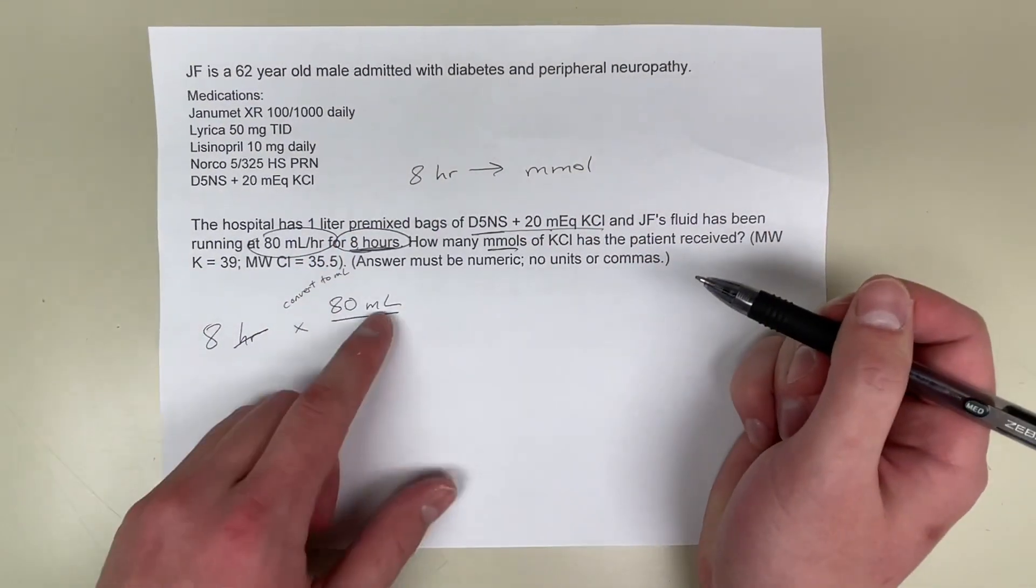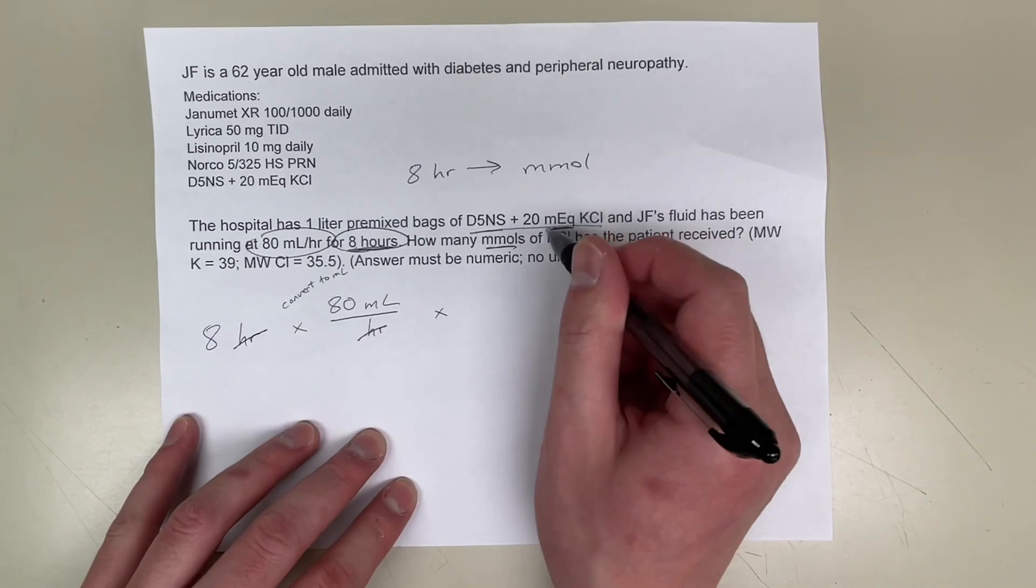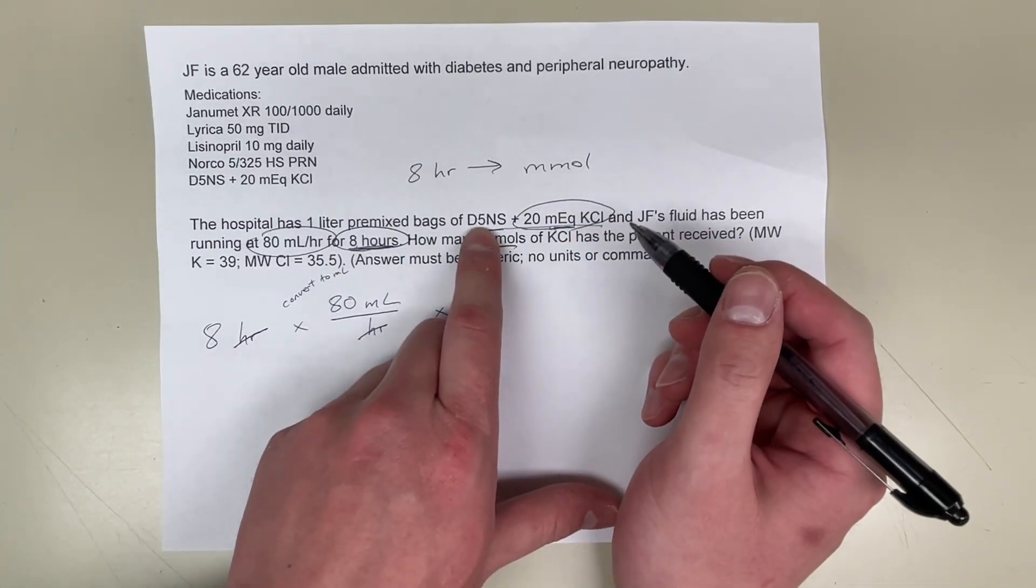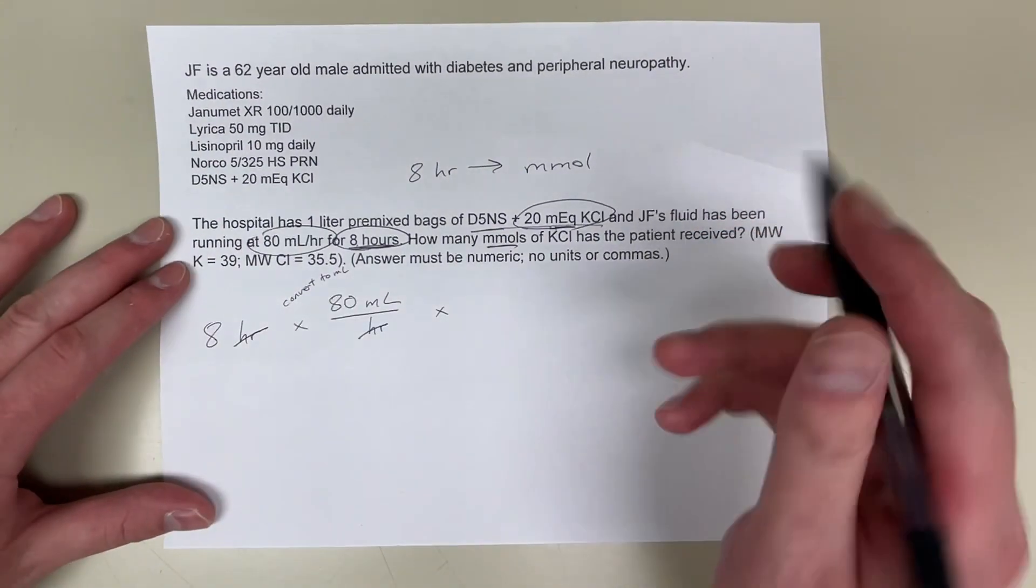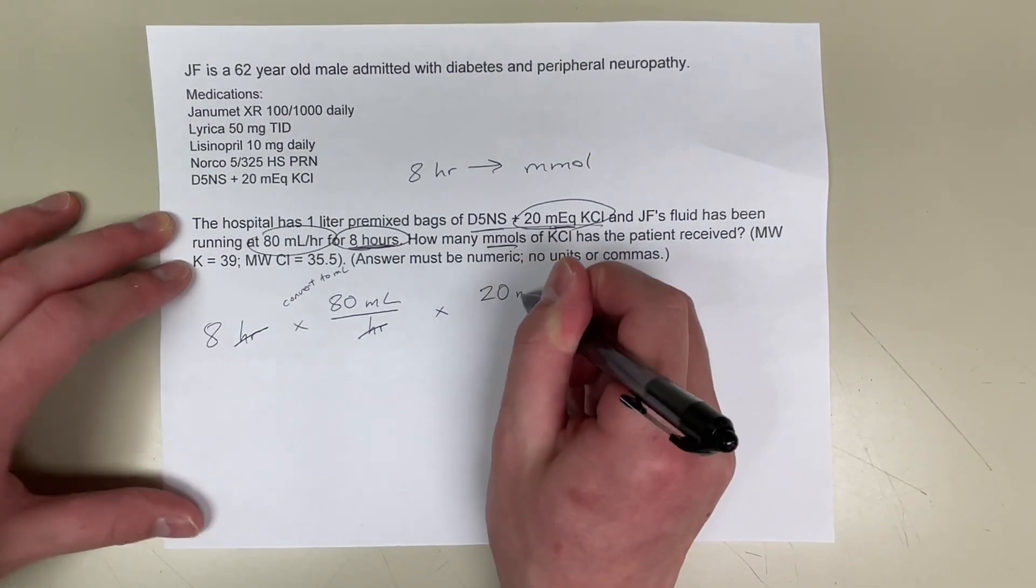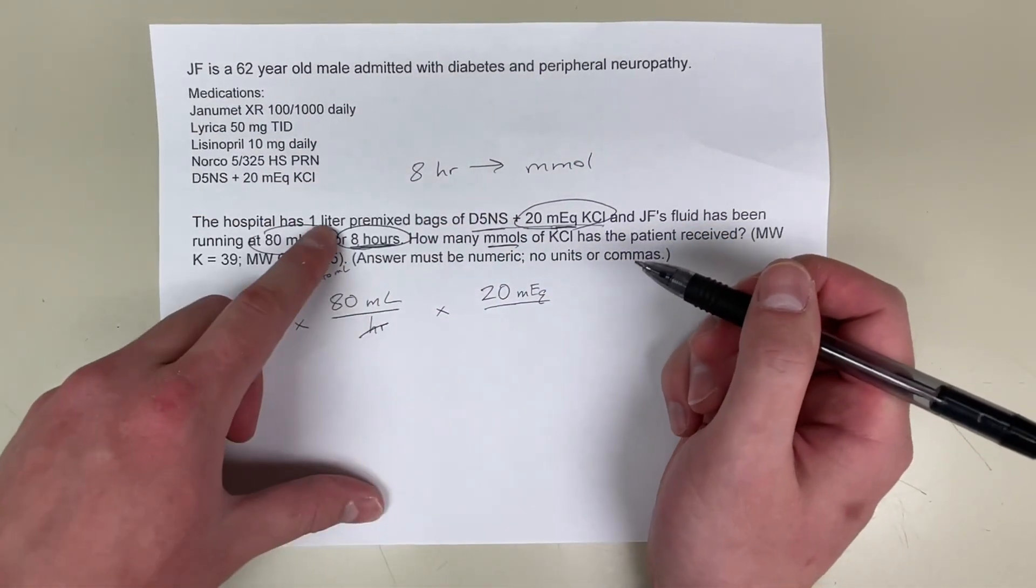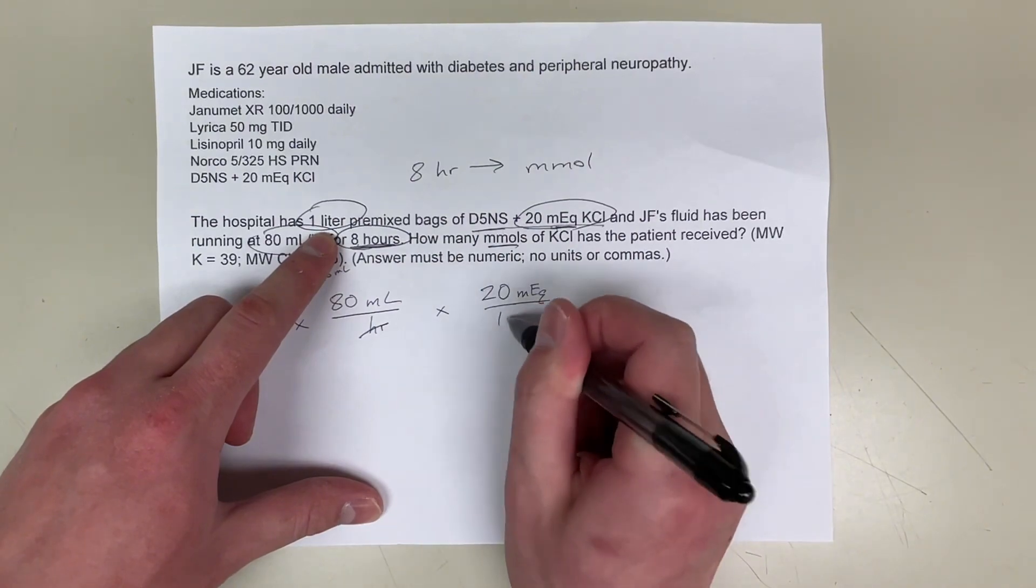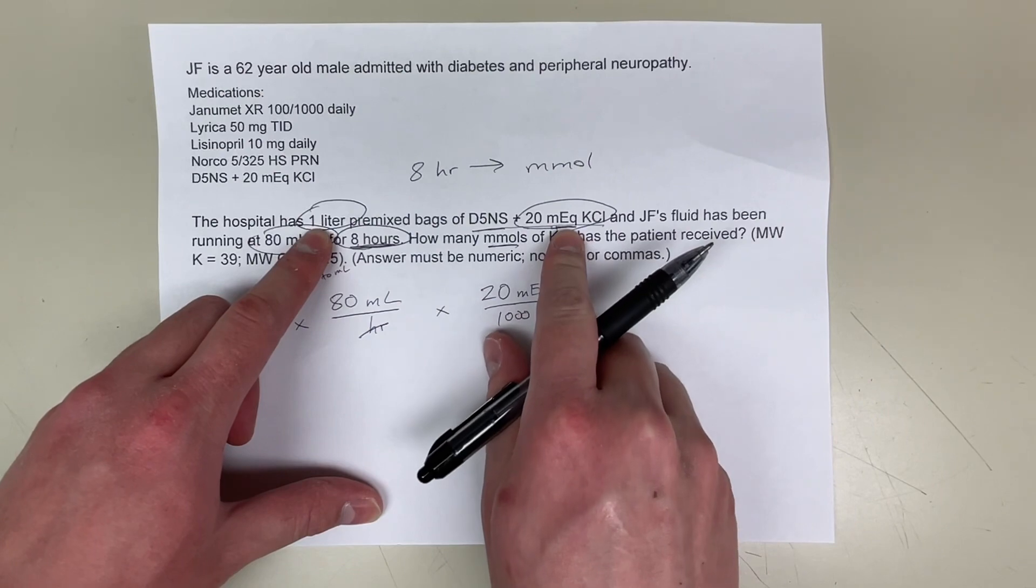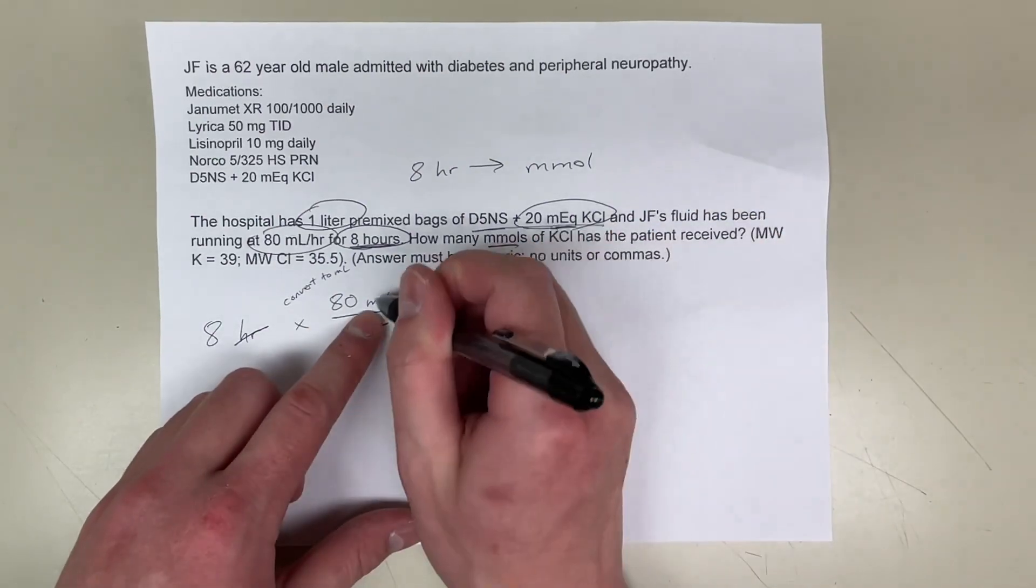Next I'm going to convert this milliliters to milliequivalents. So there's 20 milliequivalents of potassium chloride because they're only worried about potassium chloride. You don't need to know anything about this D5-NS because the question is specifically asking about potassium chloride. So there's 20 milliequivalents of potassium chloride for every 1,000 milliliters or 1 liter. This 1 liter bag has 20 milliequivalents of potassium chloride. That's where I got this proportion from. So I got milliliters here cancel out the milliliters here.